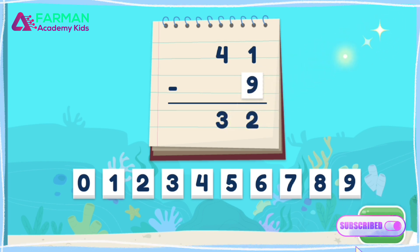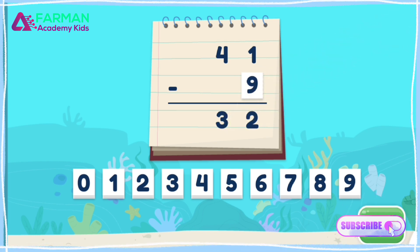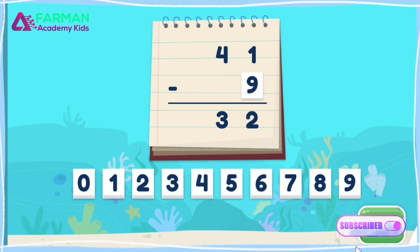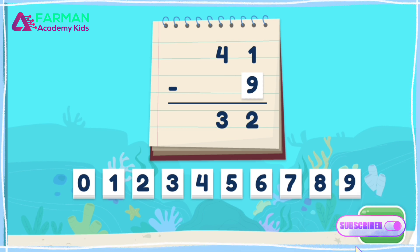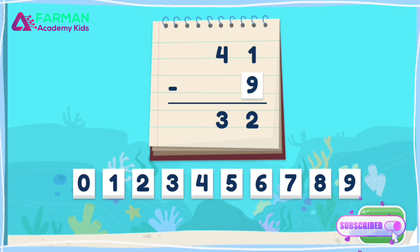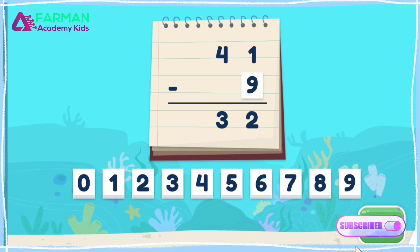Good work! 41 minus 9 equals 32. 9 sharks swam away.